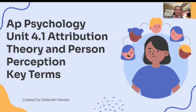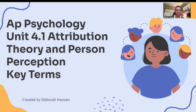So today we're going to look at Unit 4.1, Attribution Theory and Person Perception. We're going to look at the key terms today, the definitions and real life examples. If you want a little bit more information about the essential knowledge you need to know for this section of Unit 4, then you'll have to go to the other videos where I'll go through each of the CED questions. There were three for this section and I'll talk about the essential knowledge and everything you need to know for this part of Unit 4.